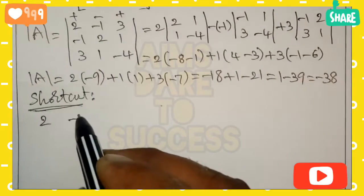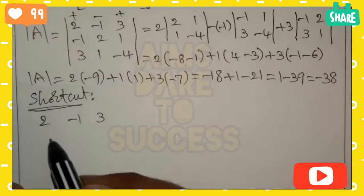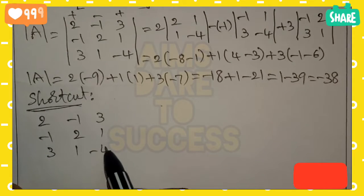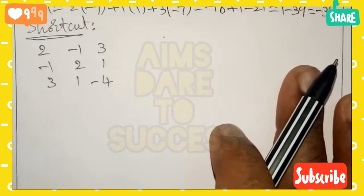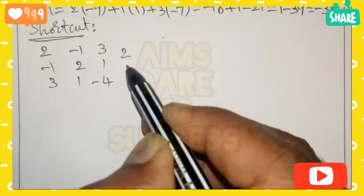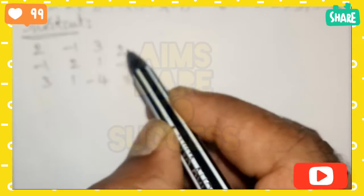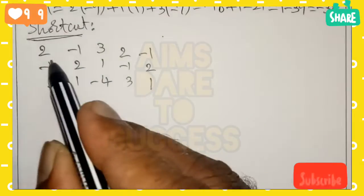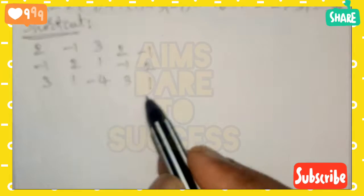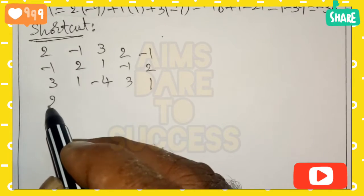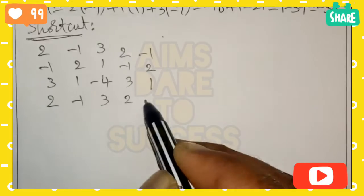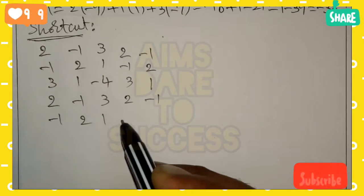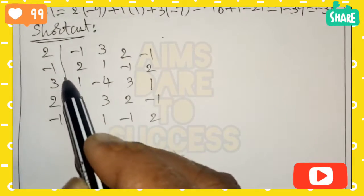Now apply the shortcut — you will get the adjoint A in less than 30 seconds. Write the A matrix as [2, minus 1, 3; minus 1, 2, 1; 3, 1, minus 4]. Then write columns 1 and 2 as they are to the right: [2, minus 1, 3] and [minus 1, 2, 1]. After that, copy-paste row 1 below the matrix: [2, minus 1, 3, 2, minus 1]. Also copy-paste column 2 below: [minus 1, 2, 1, minus 1, 2]. After that, remove column 1 and row 1.